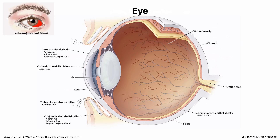The eye is also a site of infection. It has conjunctival membranes — conjunctival epithelial cells go from your eyelid to covering the front surface of the eye. They can be infected with a number of viruses. If you've seen someone with a red eye, that's a subconjunctival bleed, which can be caused by adenoviruses — very common if you go swimming where the pool has not been properly sanitized. Other cells that can be infected include corneal stromal fibroblasts, corneal epithelial cells, and even retinal pigment epithelial cells.